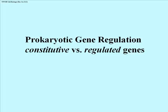Now, prokaryotic gene regulation. The first thing is to define two kinds of genes. We think of regulated genes — those that are turned on or turned off in response to particular environmental signals or stresses — versus constitutive genes, which are genes that are on all the time. Many genes have to be on all the time, such as genes that code for enzymes in glycolysis or in the Krebs cycle.